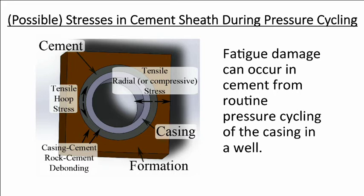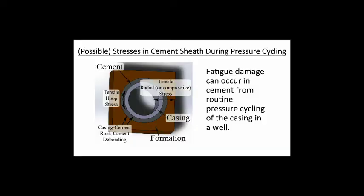What causes the cement to become damaged? There are several possible stresses that can occur in the cement sheath when pressure cycles are applied. I'm specifically looking at fatigue damage — damage that occurs when something is routinely pressurized over and over, usually at the same pressure, and eventually fails at a pressure lower than the actual strength of the material. This has been observed in wells where cement doesn't see compressive stresses exceeding its strength, yet still shows signs of damage, leading researchers to consider other stress possibilities.